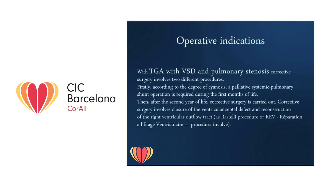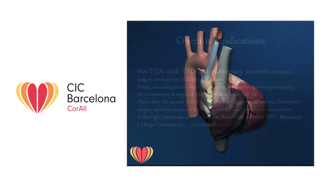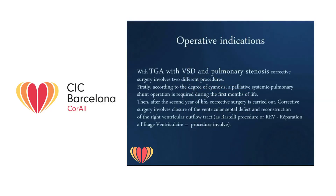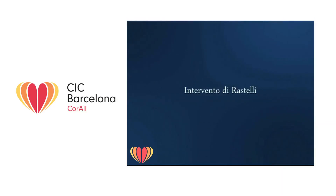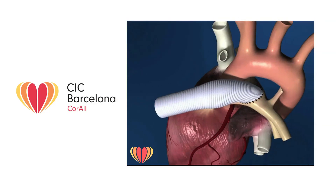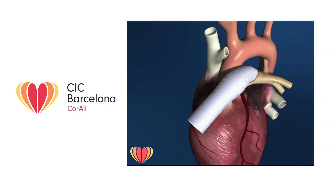With transposition of the great arteries with ventricular septal defect and pulmonary stenosis, corrective surgery involves two different procedures. First, according to the degree of cyanosis, a palliative systemic pulmonary shunt operation is required during the first months of life. Then, after the second year of life, corrective surgery is carried out, involving closure of the ventricular septal defect and reconstruction of the right ventricular outflow tract via the Rastelli procedure or the REV (Réparation à l'étage ventriculaire) procedure. The Rastelli procedure involves placement of a valved conduit between the right ventricle and the pulmonary artery bifurcation to reconstruct the right ventricular outflow tract.